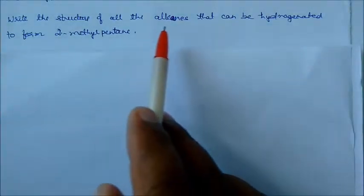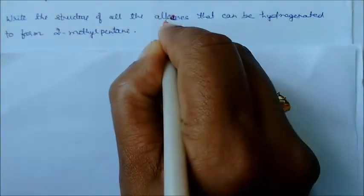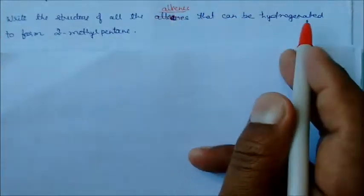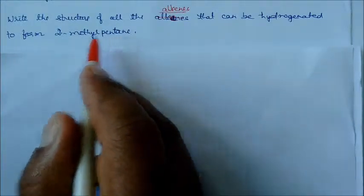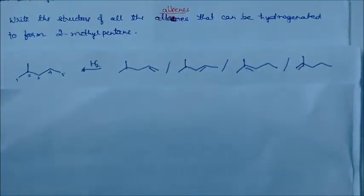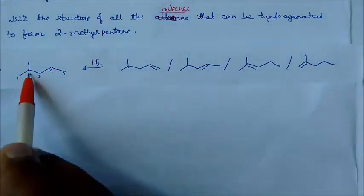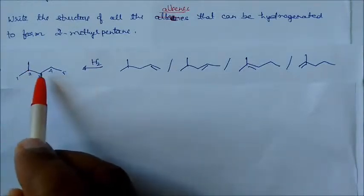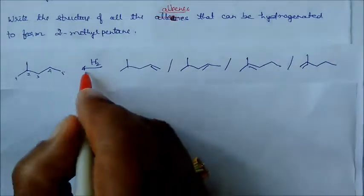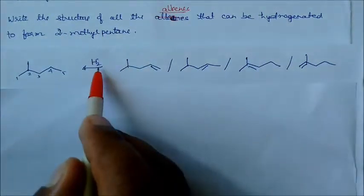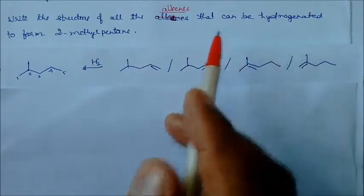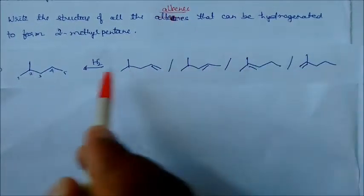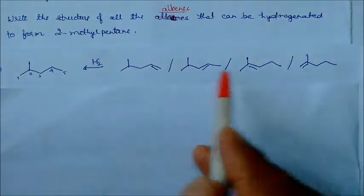Write the structures of all alkenes that can be hydrogenated to form 2-methylpentane. Starting from 2-methylpentane — a 5-carbon chain with one methyl group — on hydrogenation we need alkene precursors. There are four different types of alkene structures possible that would yield 2-methylpentane upon hydrogenation.